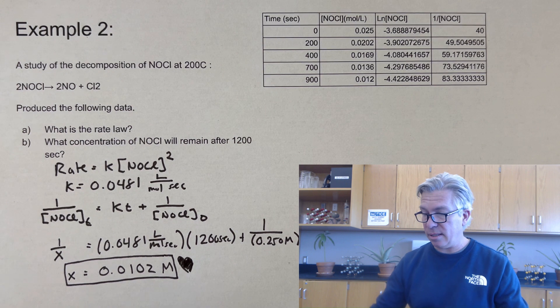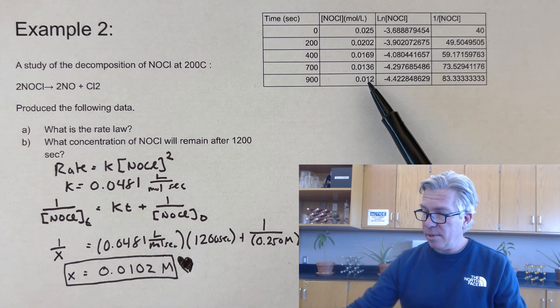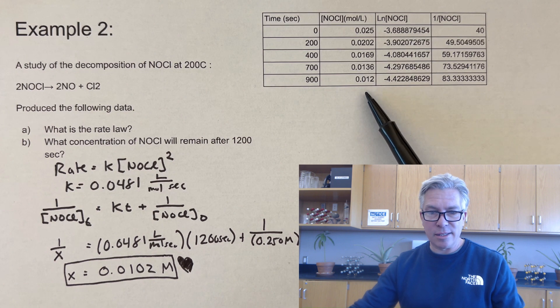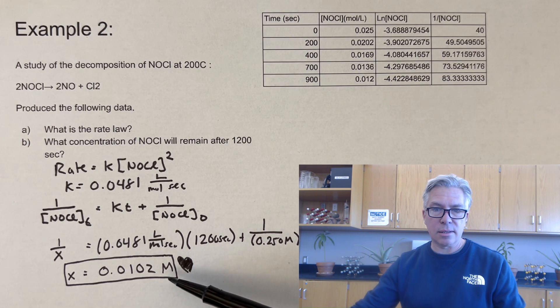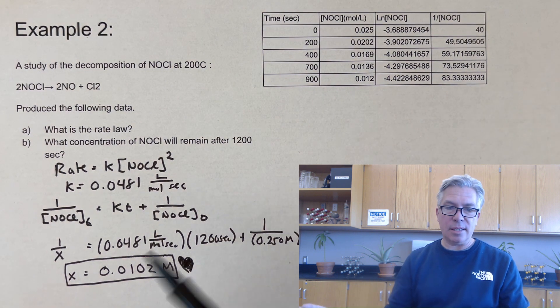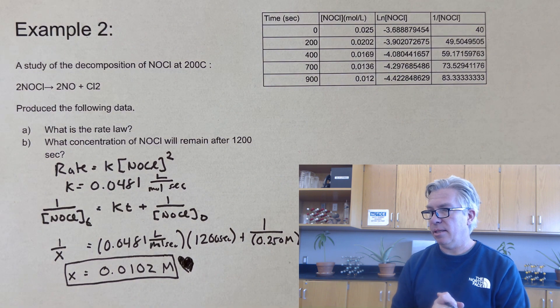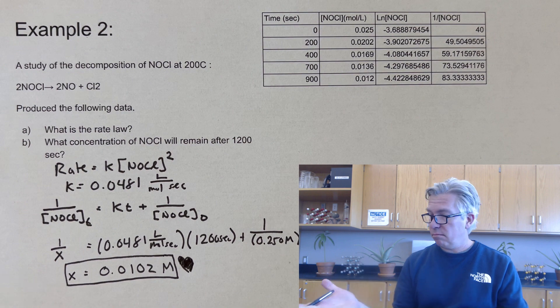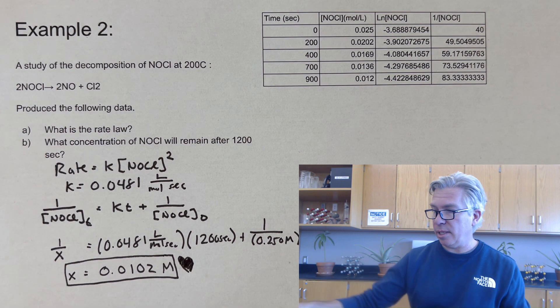And of course you want to highlight your answer. Make sure you put a little heart next to it because we love getting those nice answers. And it is a nice answer. I perform the does this make sense test. And I'm thinking if I'm going beyond 900 to 1200, it should end up less than 0.012. And it does by a little bit. So that makes sense to me. And that's a good thing in this case. So there's another example in a slightly different wording where we didn't know the order of the reaction.